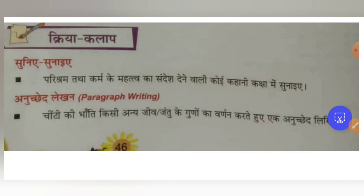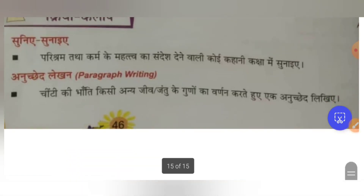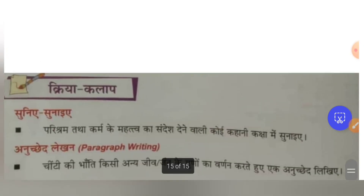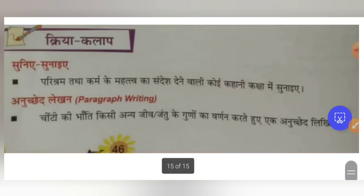Anuchet lekhan — paragraph writing. Chinti ki taanthi kisi aur jiv-jantu ke gunon ka varnan karte hue anuchet likhiye. As we have read about chinti, you have to take another insect or living creature — like honeybee — and describe its characteristics as a paragraph. Honeybee also lives in a colony like the ant. Try to translate your English sentences into Hindi. I am not giving the answer for this — I want you to try. If you need support, put it in the comment section and I will help. Hope you have understood the book pack exercise. In the next video we will see the question answers. Thank you students.